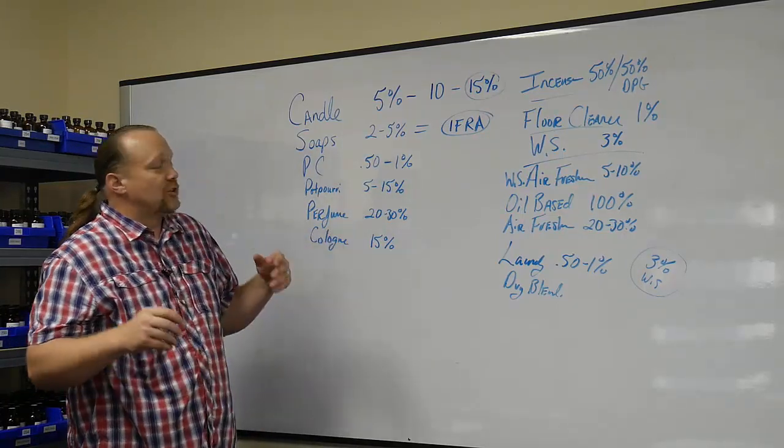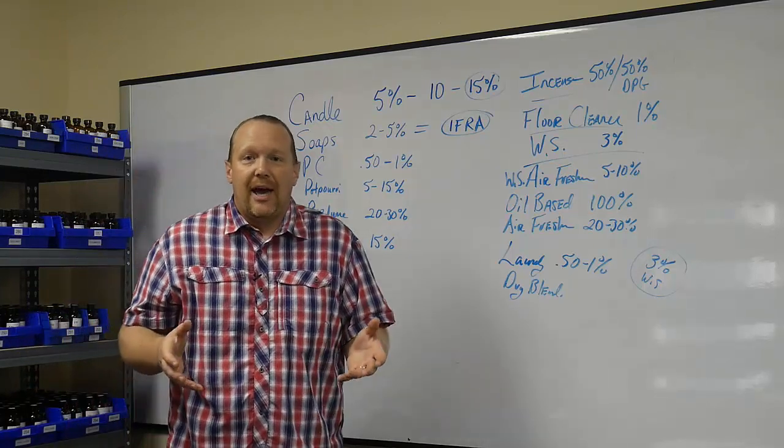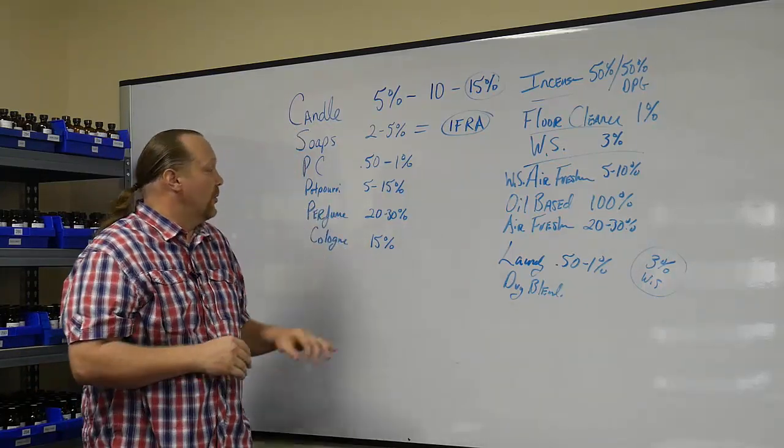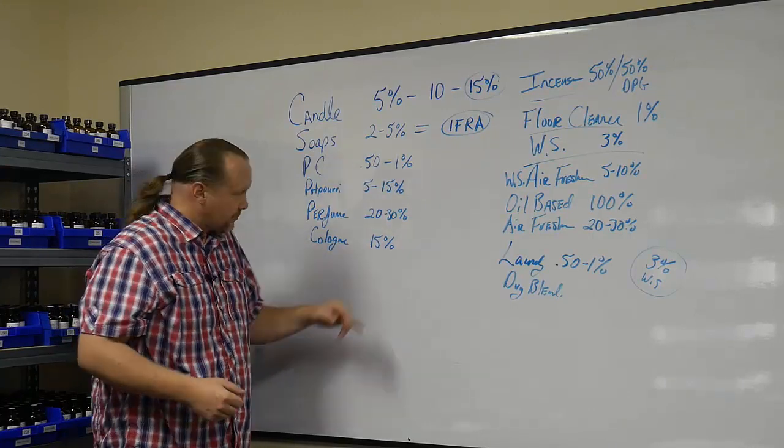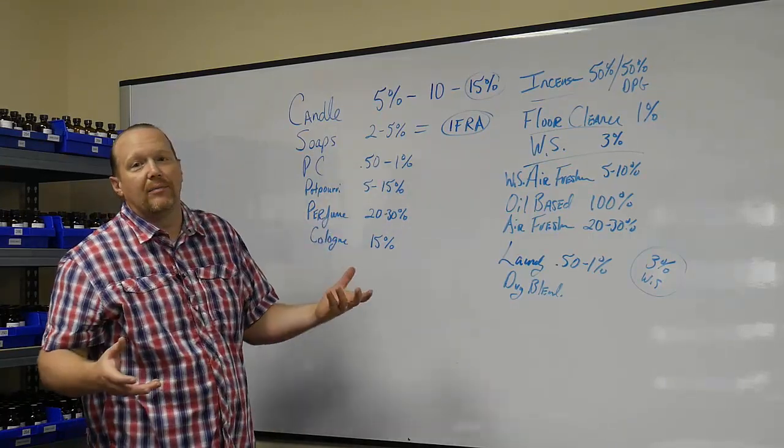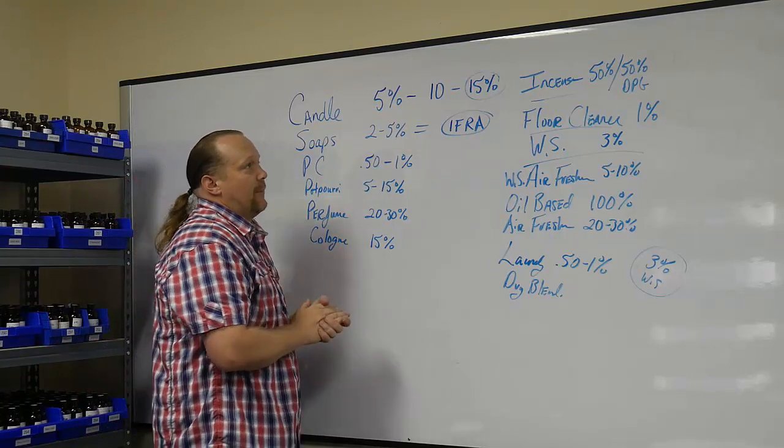Perfume. Perfume is going to be 20% to 30% fragrance. And the only reason why cologne is a little bit lower at 15% is because men just don't like it as strong. The rest of that's going to be made up of alcohol, add a little bit of water and that's that product.